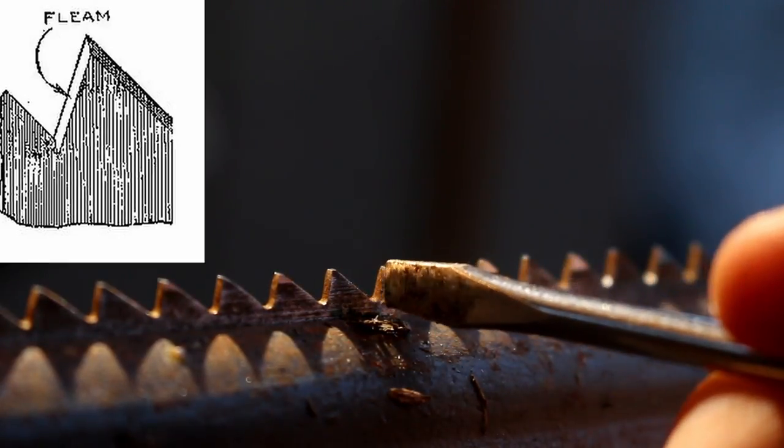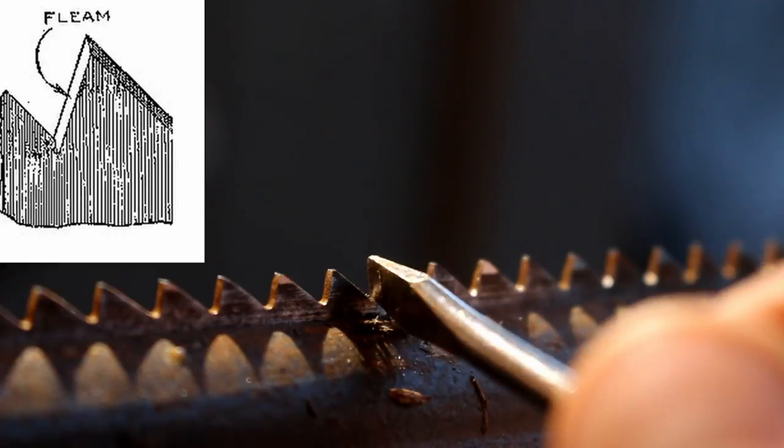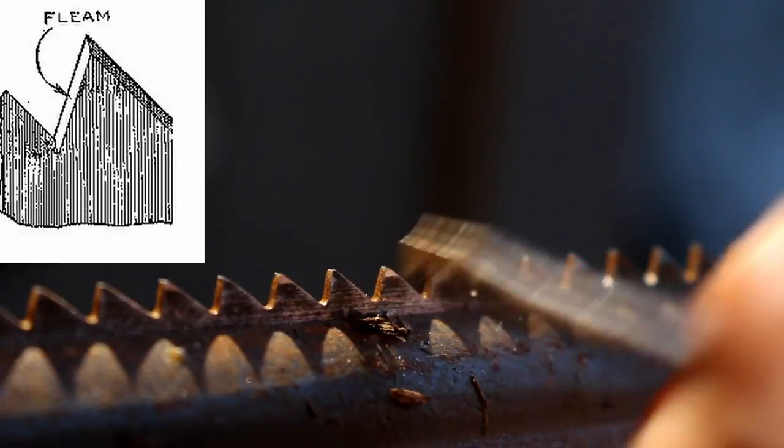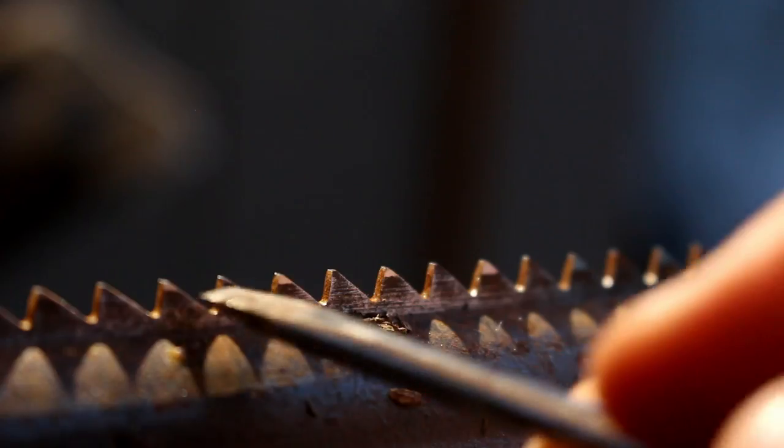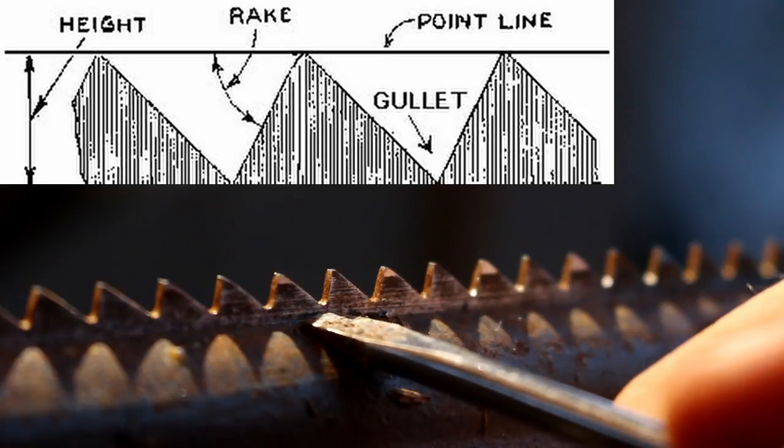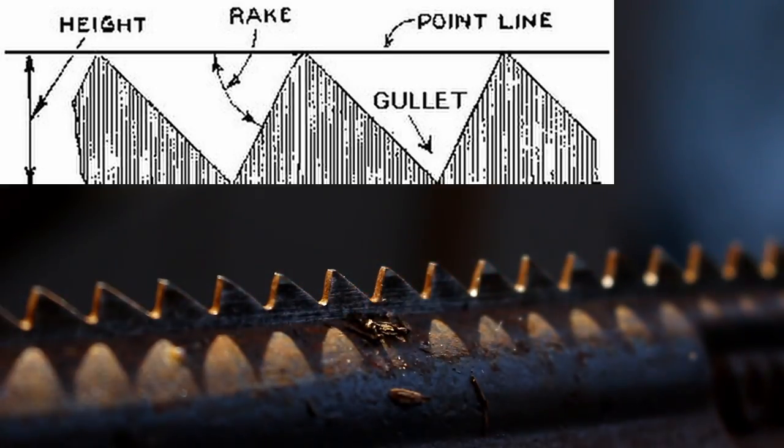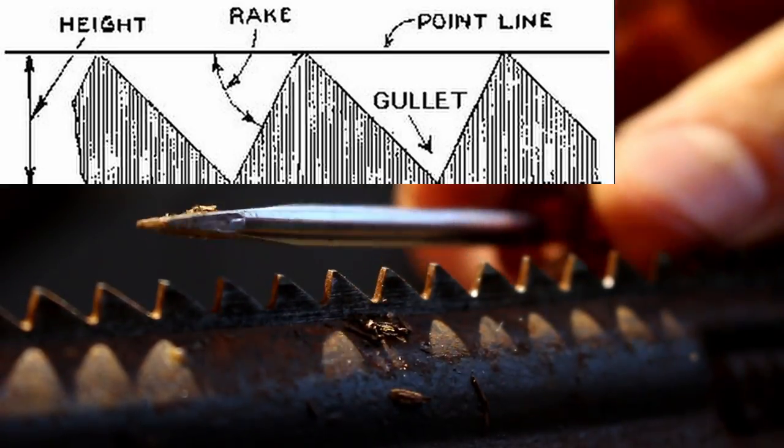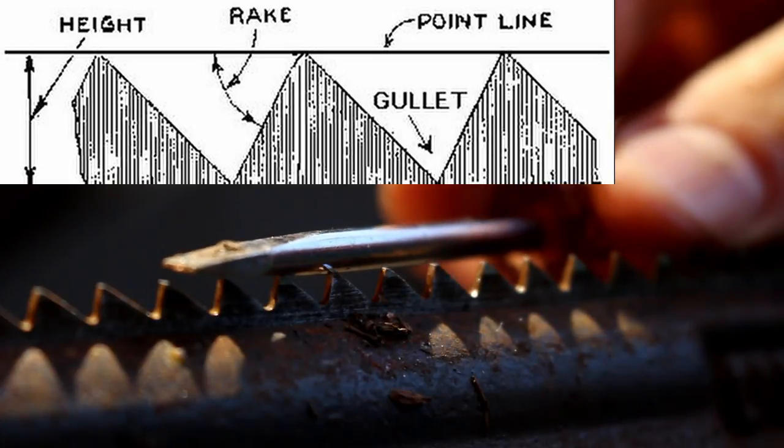For people that don't know, the phlegm is the in between part right there. The gullet, of course, is at the bottom. The baseline of the teeth is the very top where all your teeth tips should be.